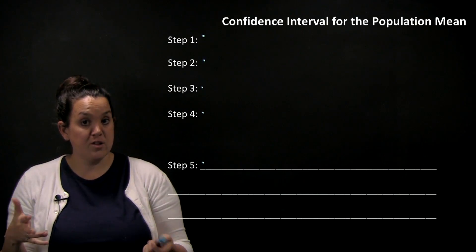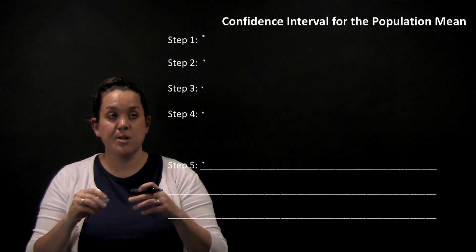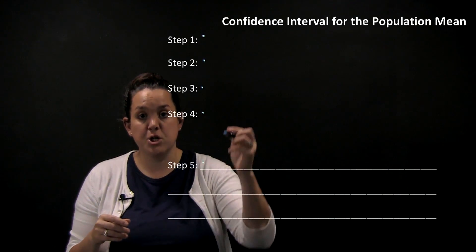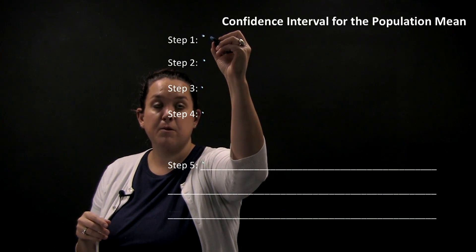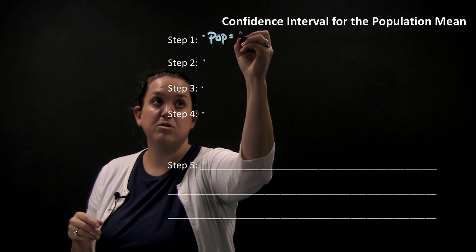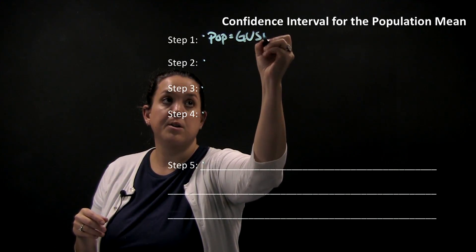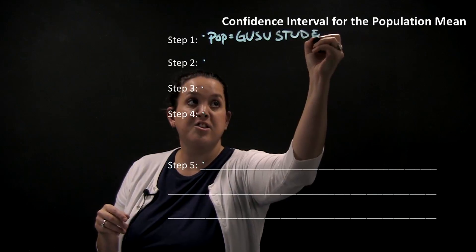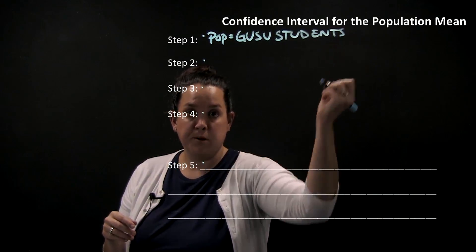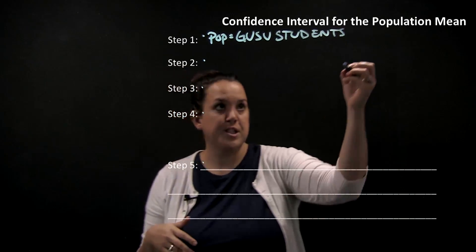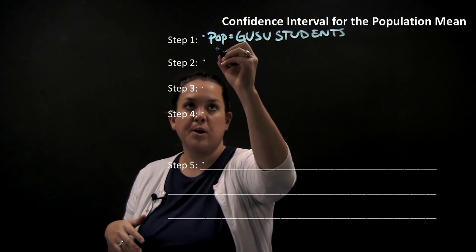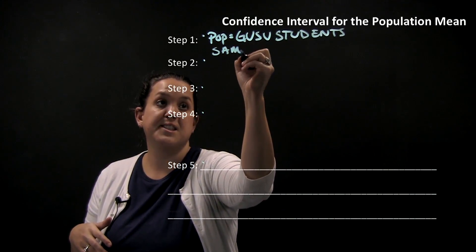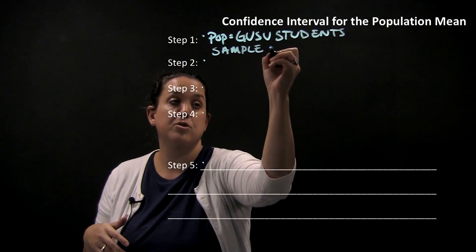The very first step is identifying the population. I would like to make an inference on the population of GVSU students. So this is going to be my population. Next we have to identify our sample, and according to your notes, our sample is going to be 175 GVSU students.